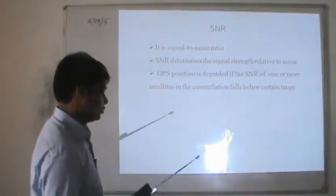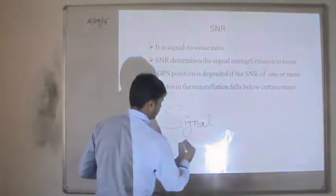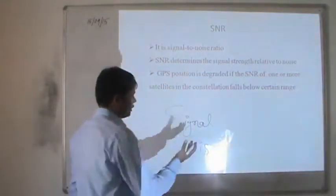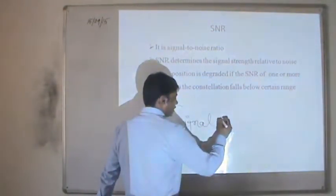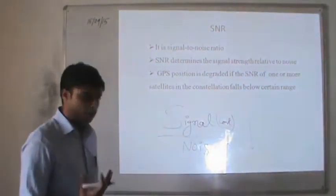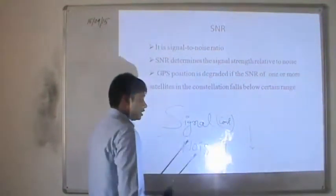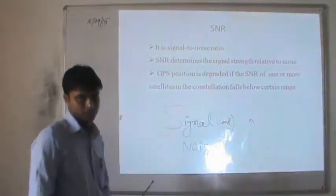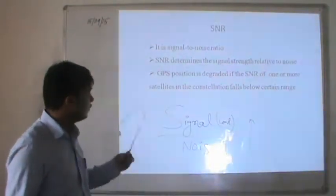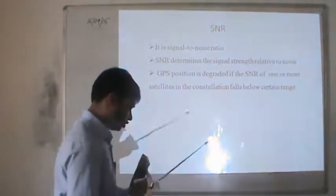The third GPS error source is Signal-to-Noise Ratio (SNR). If the signal is constant but noise is high, the ratio will be low and there will be more disturbance and error. If signal is constant and noise is low, the ratio will be high and error will be less. So receiving a signal with less noise means better accuracy, while more noise means more error.